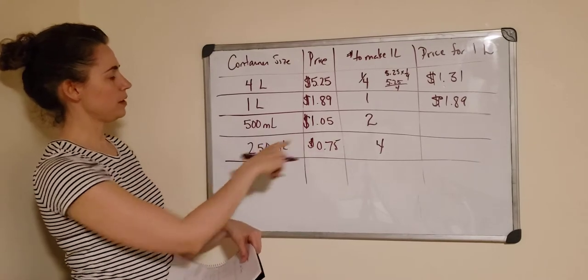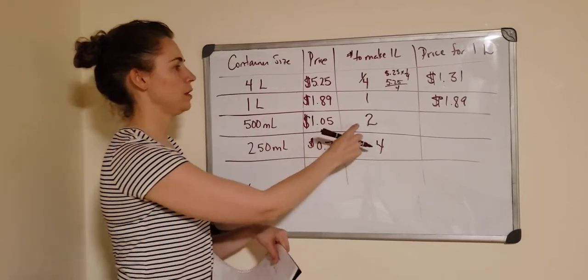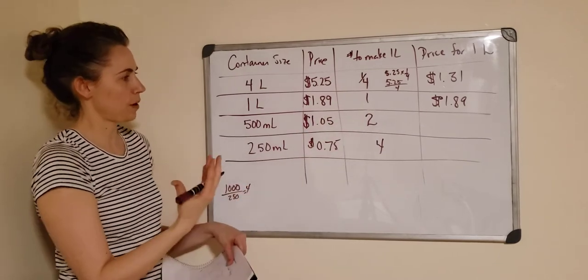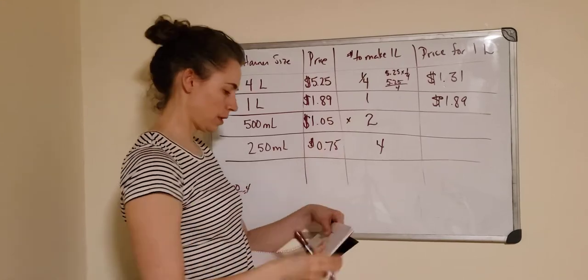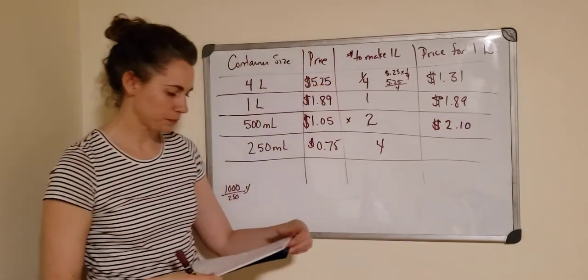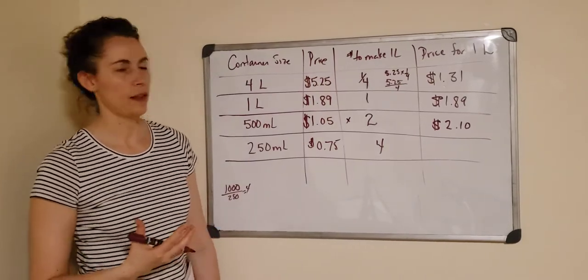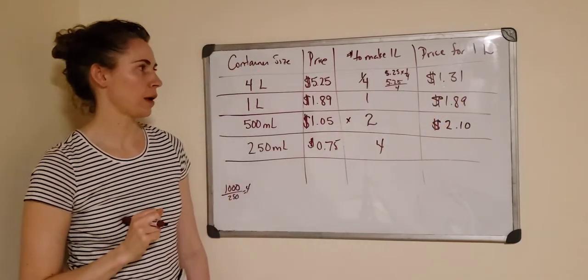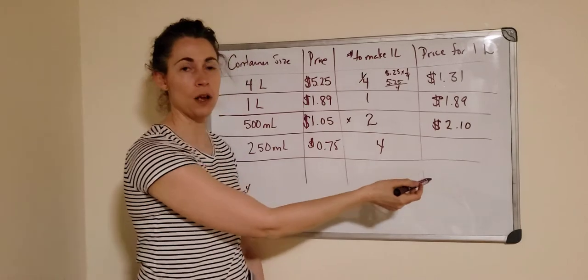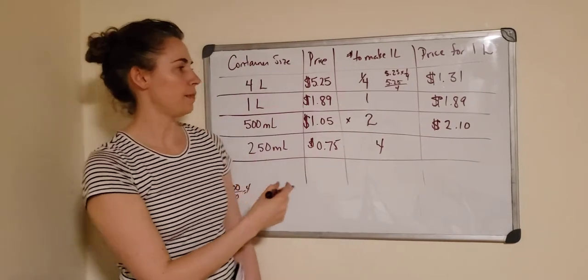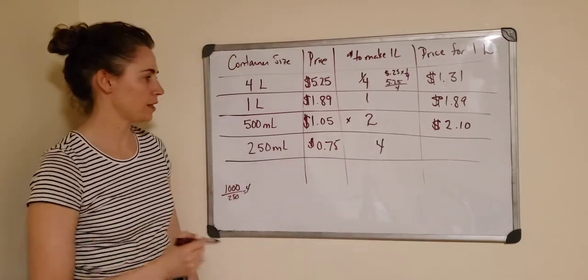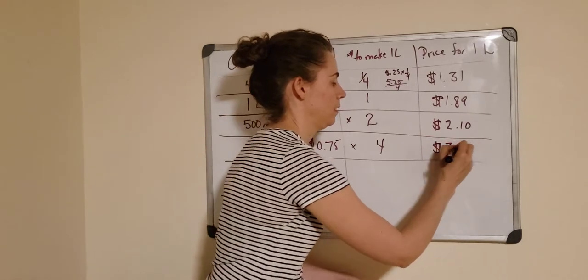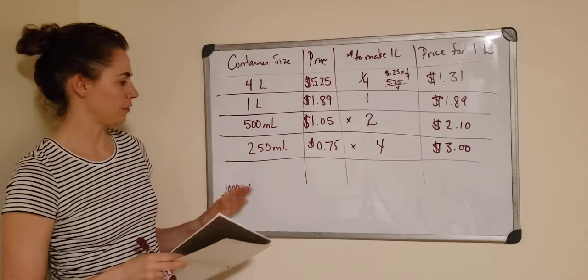Let's look at one down below. For the 500 milliliters, we said we need two parts. So we would multiply. Just like we multiplied by one over four, we'll multiply by two because that would give us the part for a liter. So $1.05 multiplied by two gives us $2.10. Something you're going to notice right away is this is typically the way it is - not always, you do need to check - but typically the more you buy of something, the cheaper per unit it is. We would expect that to buy the 250 milliliters, if you were going to get that into a liter, would be even more expensive than $2.10. If we multiply 75 cents by four to make up a liter, we would get $3.00.